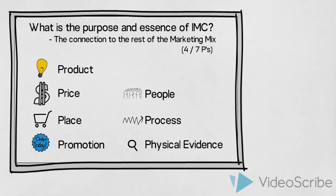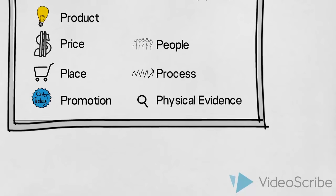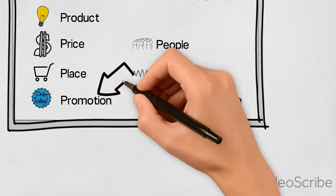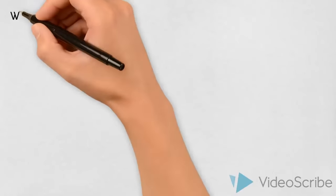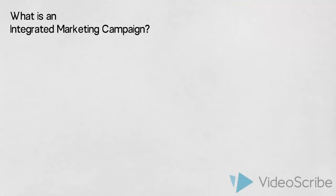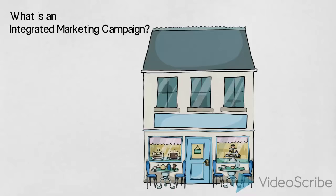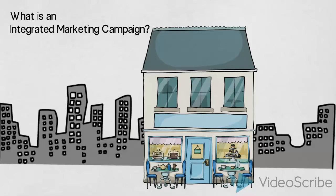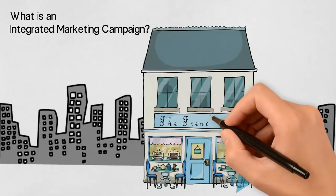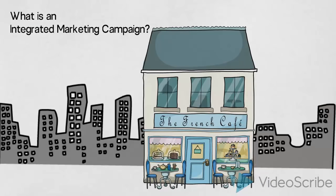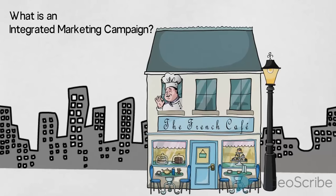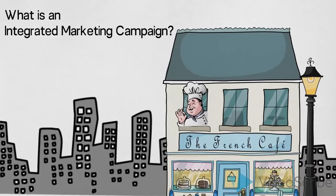None of the four or the seven P's should be decided on in isolation. However, promotion is the P which we will focus on in this video. So let us look at what an integrated marketing campaign is and why we as marketers need to know about it. We will use this cafe as an example. It is located in a large city close to a busy high street. It is called the French Cafe and it specializes in serving high quality cakes and desserts.